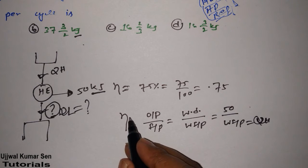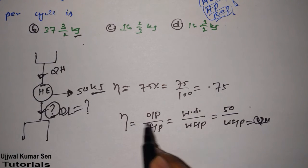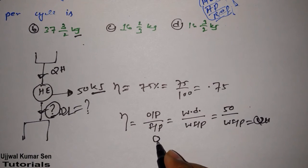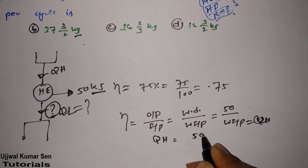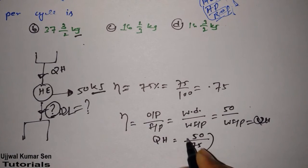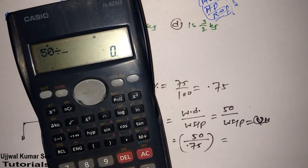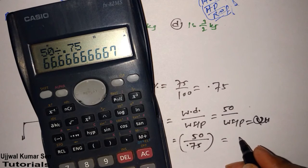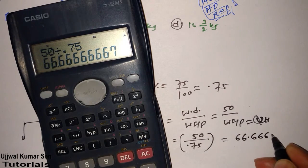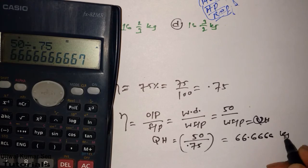Just send this one to this side and this one to this side. This will be in reciprocal, in the denominator only. So QH is equal to 50 divided by 0.75. 50 division 0.75 is equal to 66.666 kilojoule.